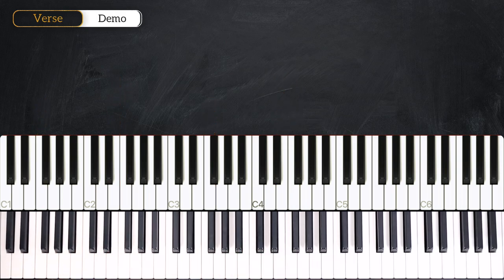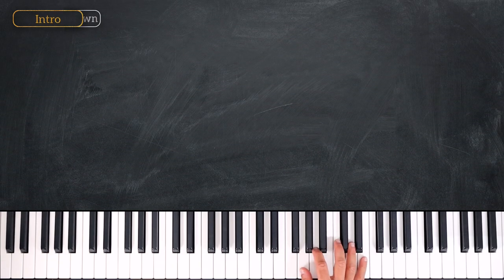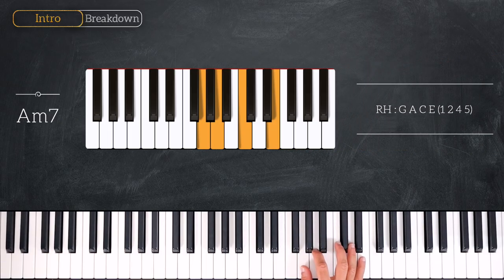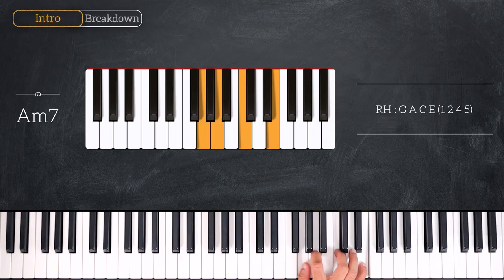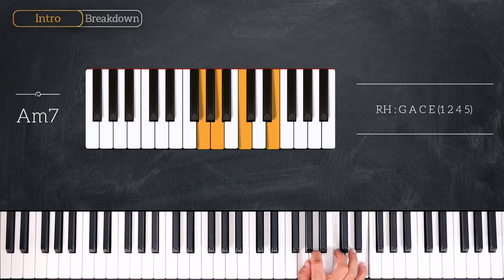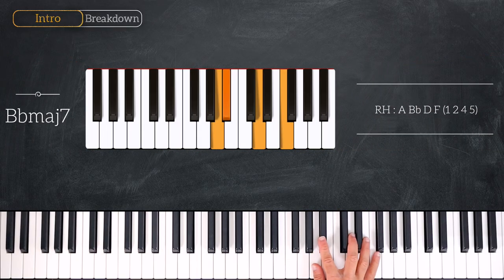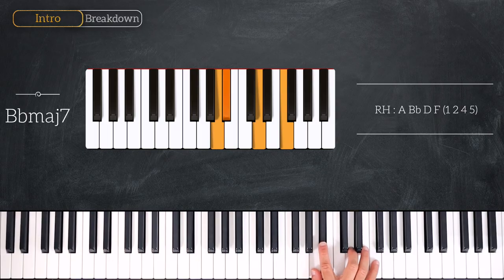All right guys, in this first part we're going to learn the introduction and the verse. Here are the chords. We start by playing an A minor 7 with the right hand playing G, A, C, E. Very nice. Then we'll play this Bb major 7: A, Bb, D, F.